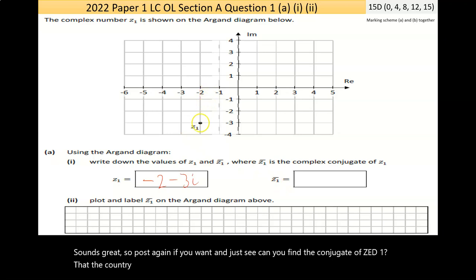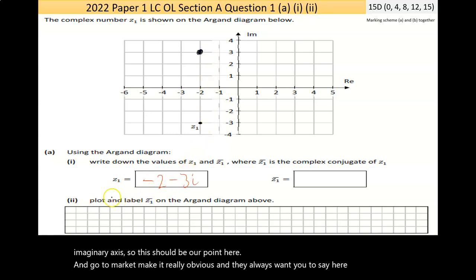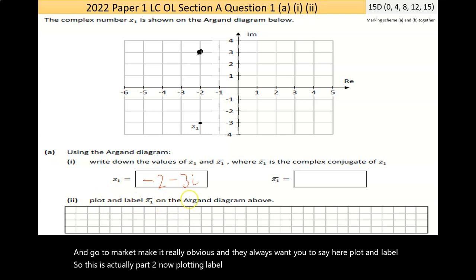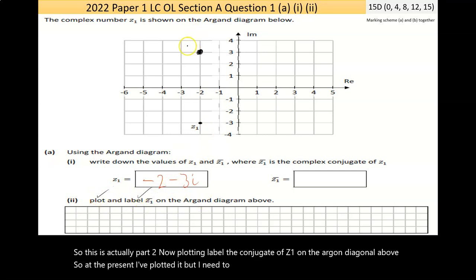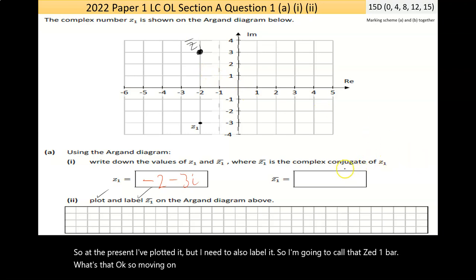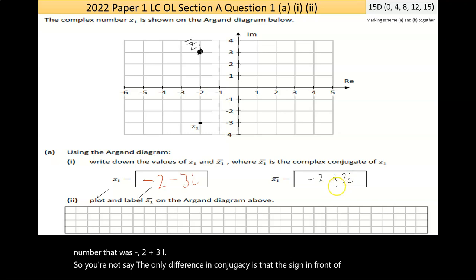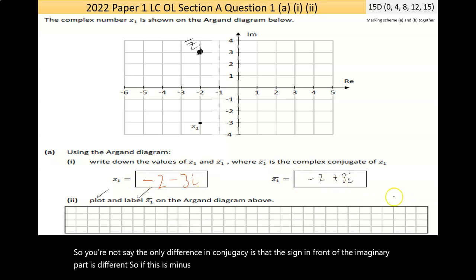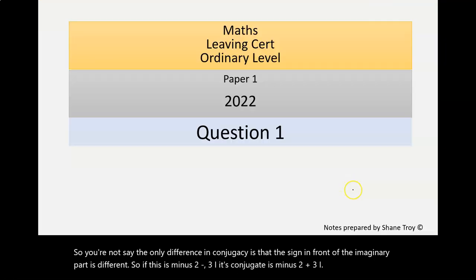Now the conjugate complex number is basically directly above it, the same distance away on the imaginary axis. So this should be our point here. I'm going to mark it, make it real obvious. And they always want you, as I say here, plot and label. So at present I've plotted it but I need to also label it. So I'm going to call that Z1 bar. Now I should write down the complex number. That was negative 2 plus 3i. So you'll notice there, the only difference in conjugates is that the sign in front of the imaginary part is different. If this is minus 2 minus 3i, its conjugate is minus 2 plus 3i.